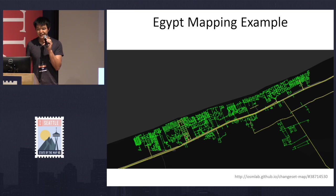This is the changeset we have in Egypt with lots of machine-generated roads.